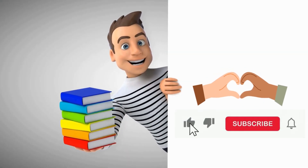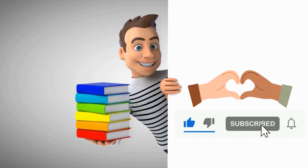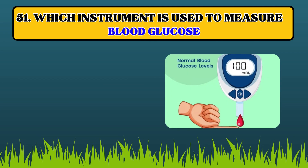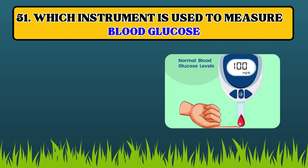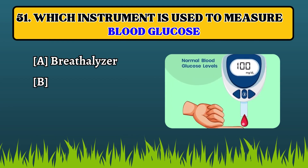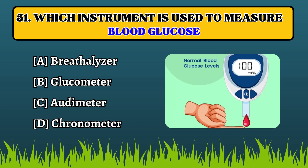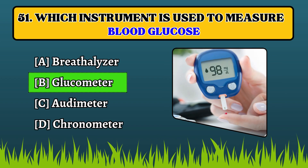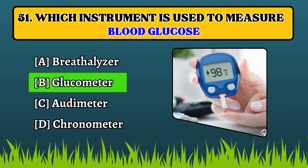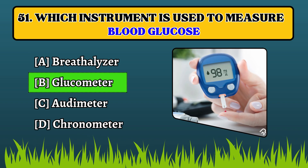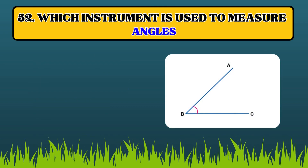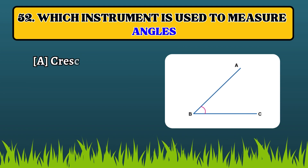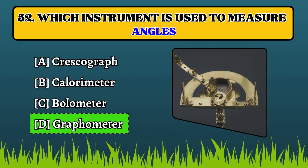Guys, if you do like this video, please do subscribe to my channel and hit the bell icon. Which instrument is used to measure blood glucose? Glucometer. Which instrument is used to measure angles? Goniometer.